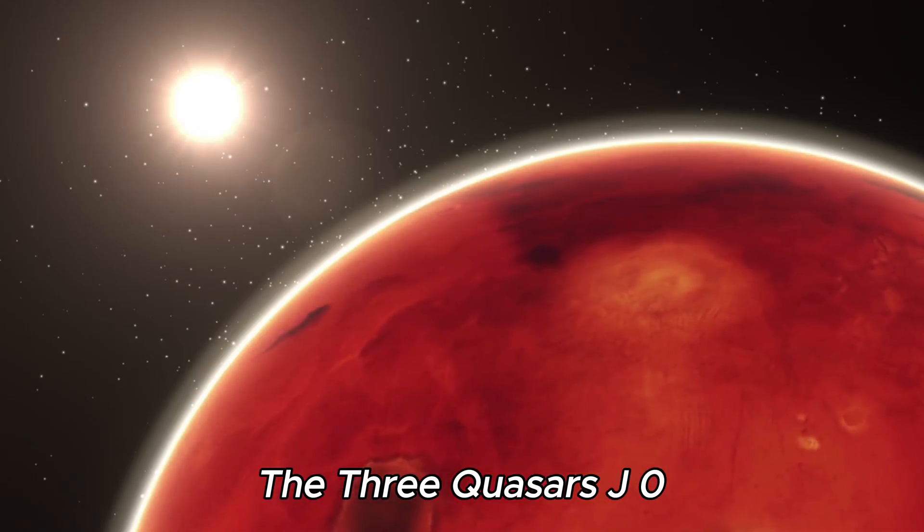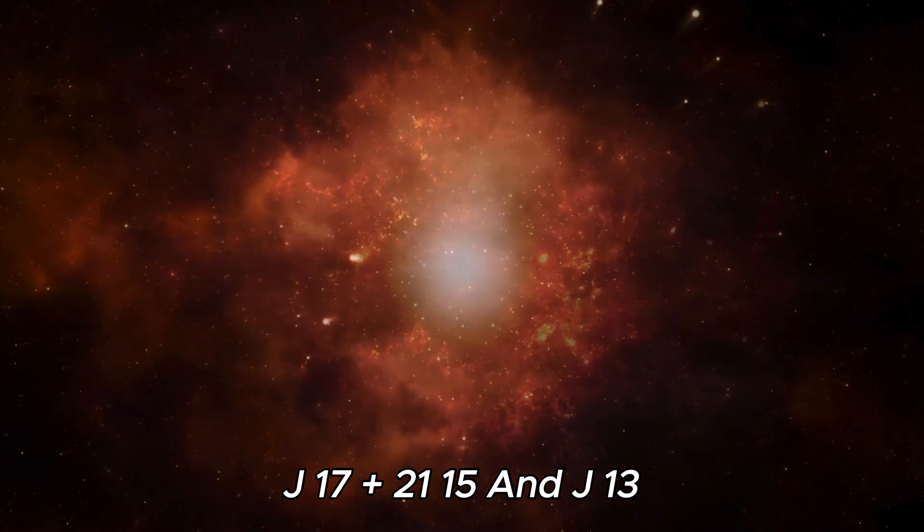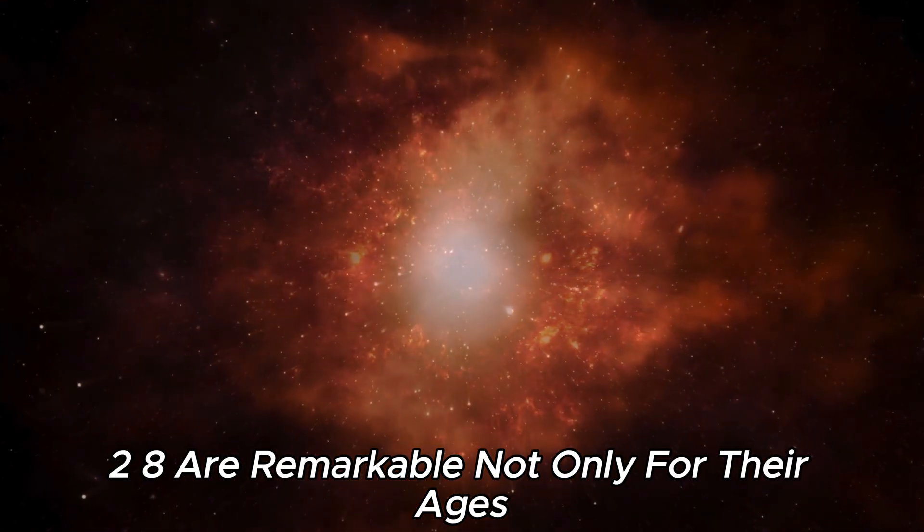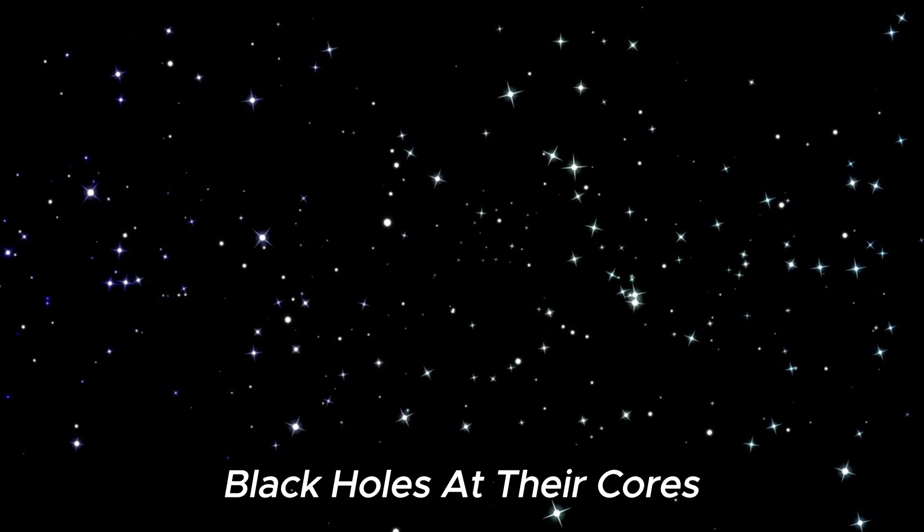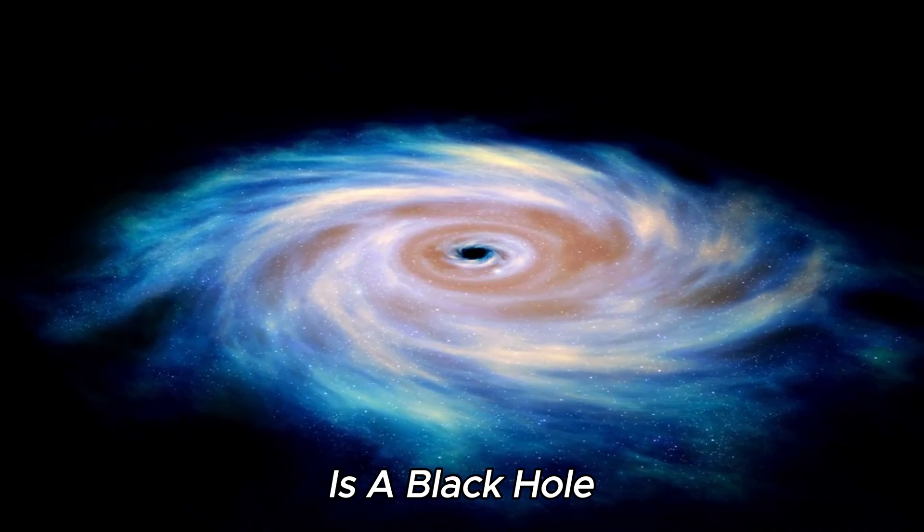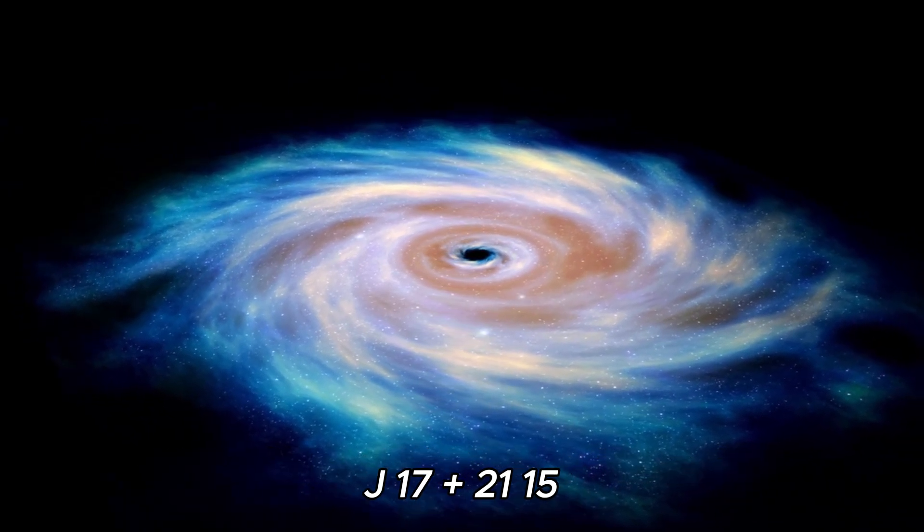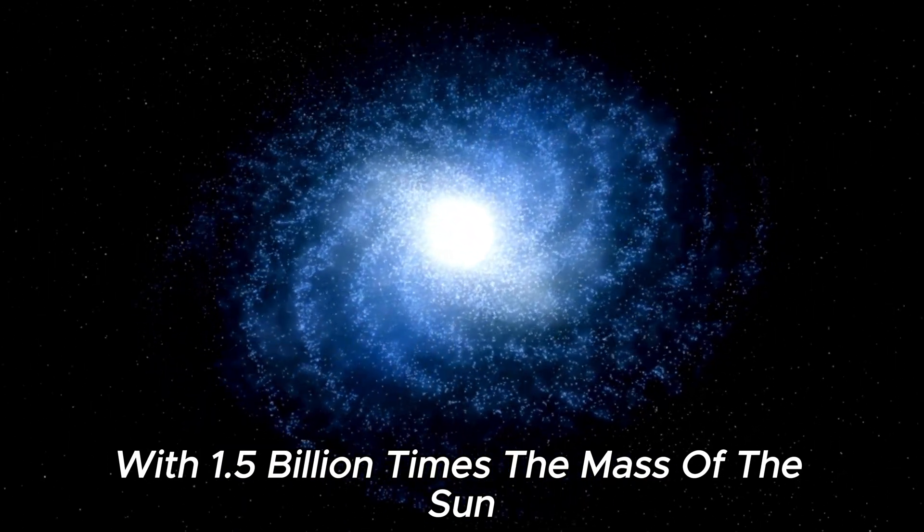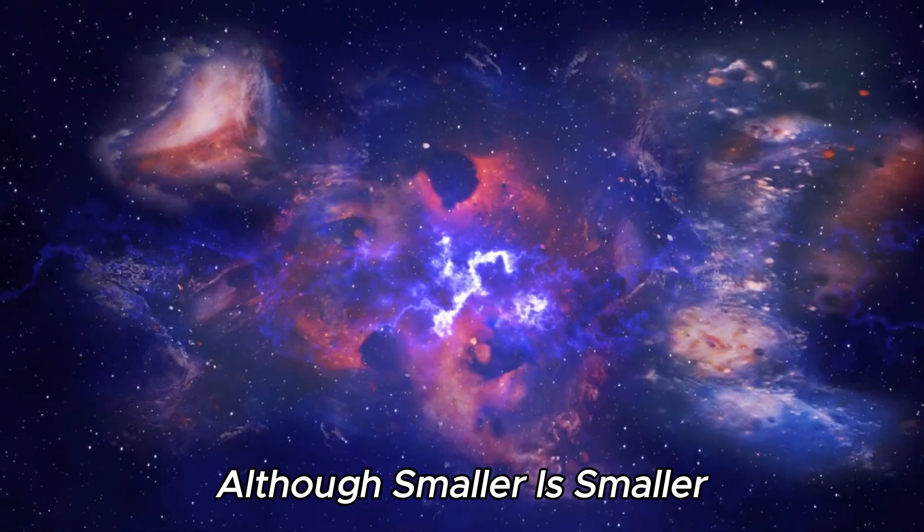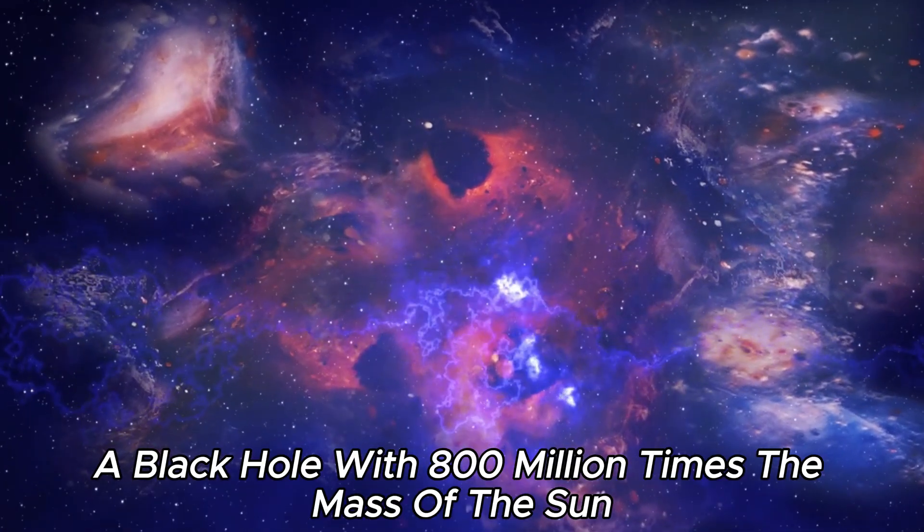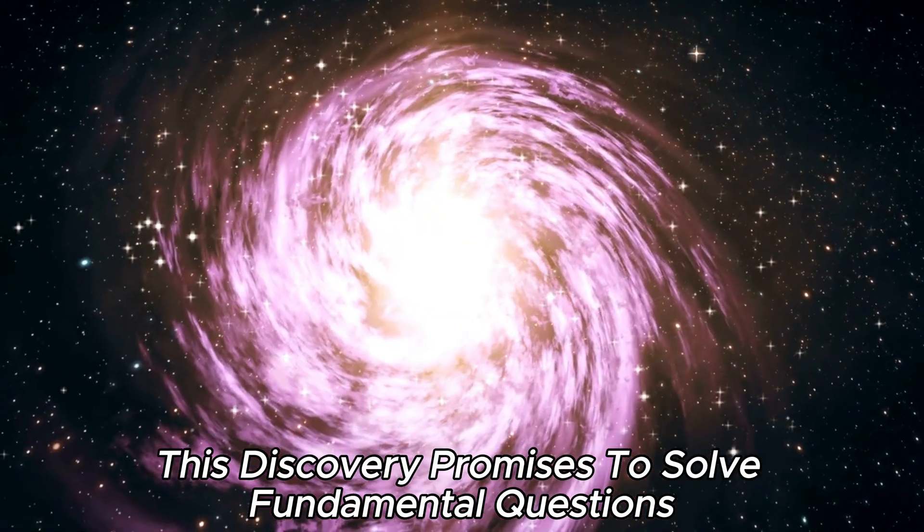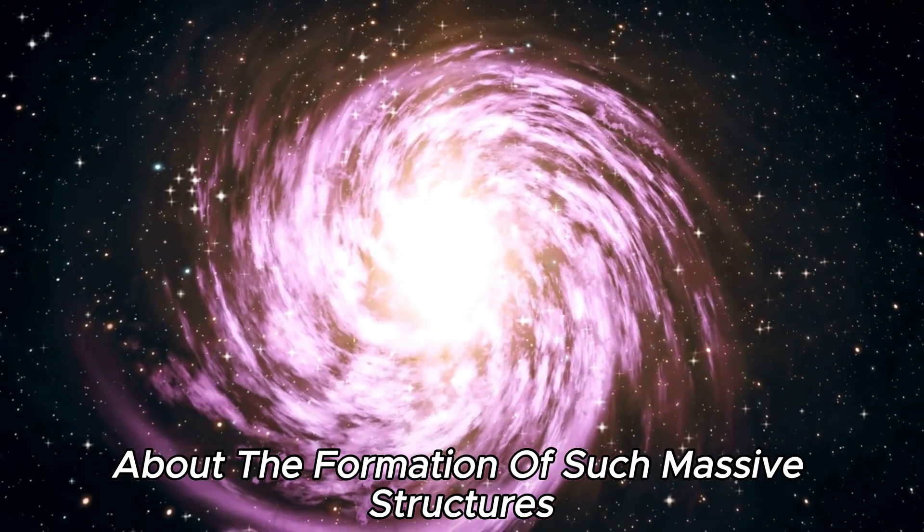The three quasars, J0313-1806, J17-2115 and J1342-0928, are remarkable not only for their ages, but also for the large masses of supermassive black holes at their cores. J0313-1806 is a black hole with a mass of 1.6 billion times the mass of the sun, and J1342-0928, although smaller, has a black hole with 800 million times the mass of the sun. This discovery promises to solve fundamental questions about the formation of such massive structures in the early universe.